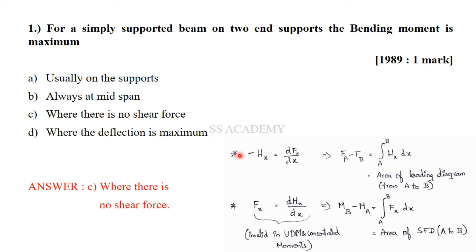Since there is a negative sign, we get FA minus FB equals the integral from A to B of W(x) dx, which represents the area of the loading diagram from A to B. Similarly, MB minus MA equals the integral from A to B of F(x) dx, which is the area of the shear force diagram from A to B.